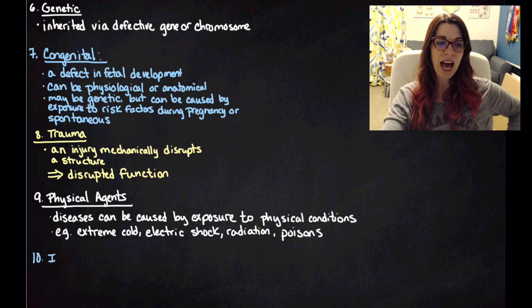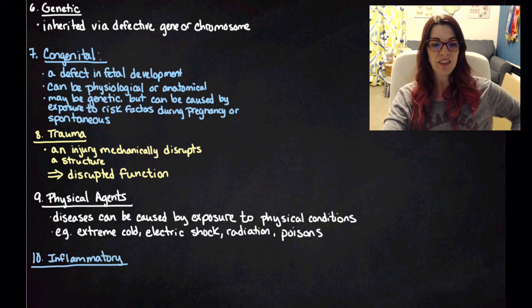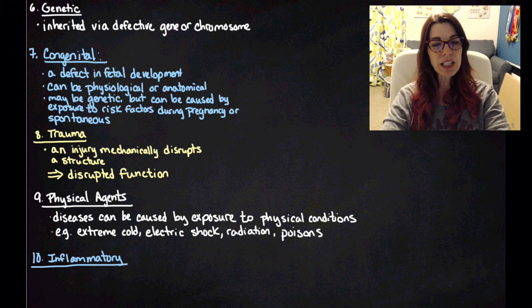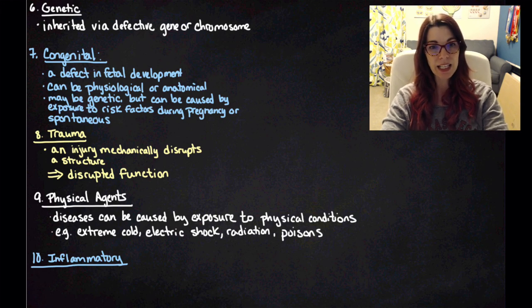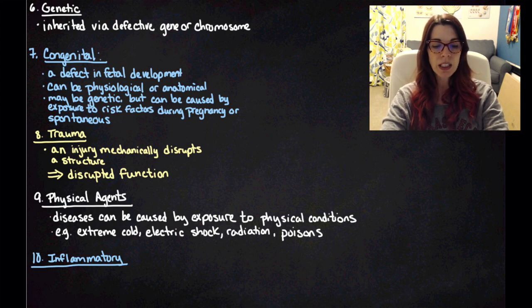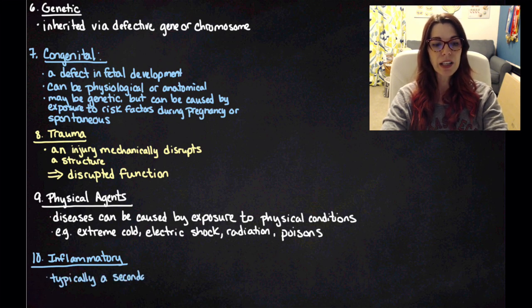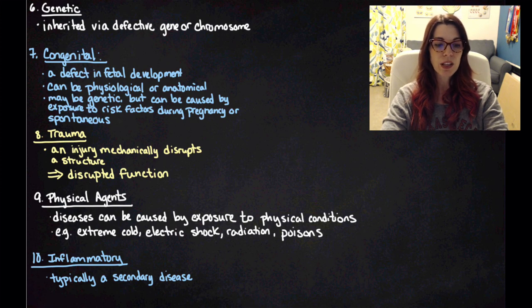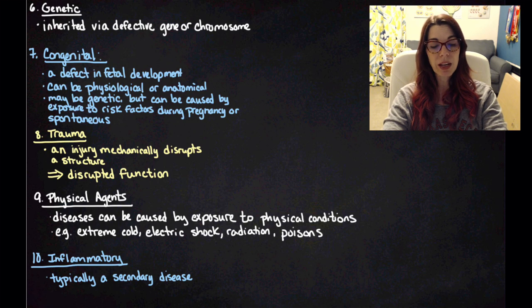And then the last category is inflammatory disease. Now inflammatory disease is normally considered a secondary disease that's associated with one of the previous nine. And we're going to do a whole other mini module on inflammation. So we're just going to be very brief right now. So it's typically going to be a secondary disease. And it's going to lead to swelling and inflammation of different body tissues.